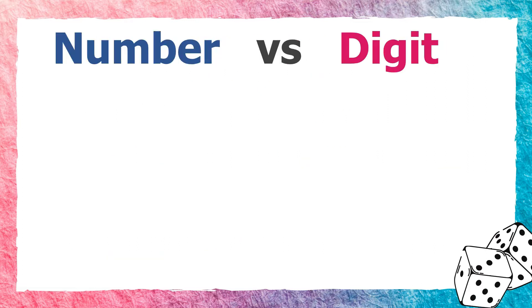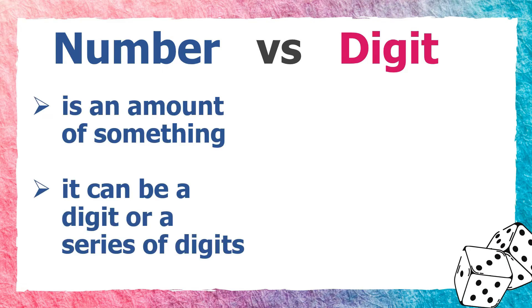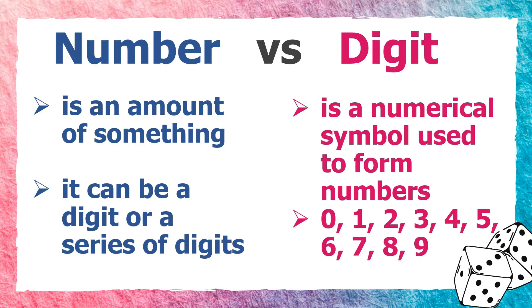As we go through this video, we will be constantly using the terms number and digit, so it is better for us to know their meanings first. This is also to help us understand these two words more. A number is an amount of something — it can be a digit or a series of digits. While a digit is a numerical symbol used to form numbers.